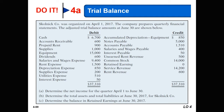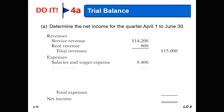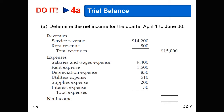To determine net income for the quarter ended June 30th, we begin by transferring our revenues: service revenues of $14,200 and additional rent revenues of $800, giving us total revenues of $15,000. We then transfer over the various expenses — salaries and wages, rent, depreciation, utilities, supplies, and interest expense — for total expenses of $12,510, giving us net income of $2,490.